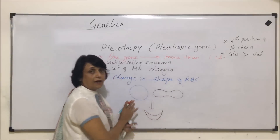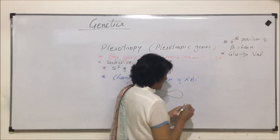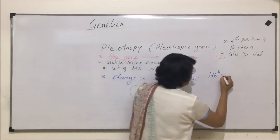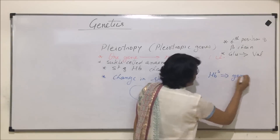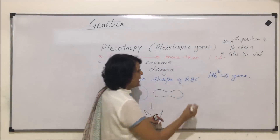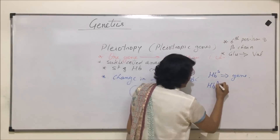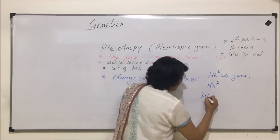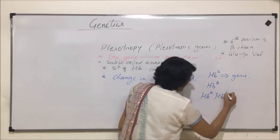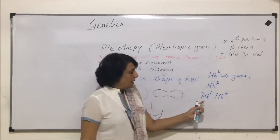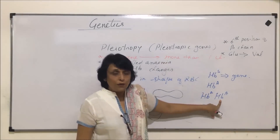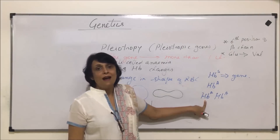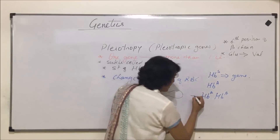We represent this condition by a genotype. The recessive gene responsible for this disease is written as HBS, and the normal allele is written as HBA. There are three situations. A normal individual will be HBA/HBA — both alleles are normal — and this is responsible for formation of normal hemoglobin and normal RBC shape.